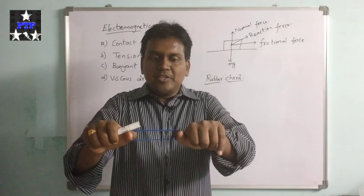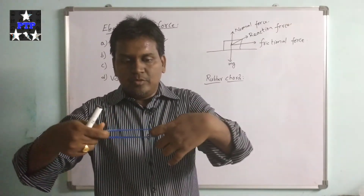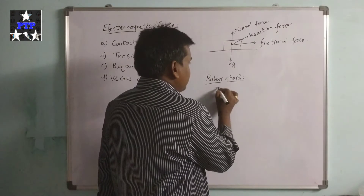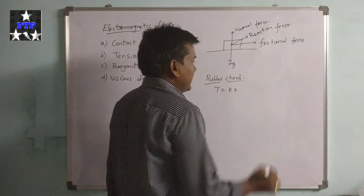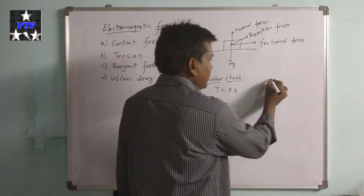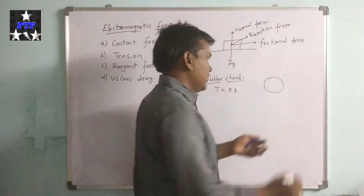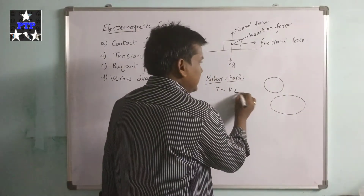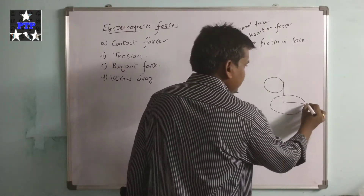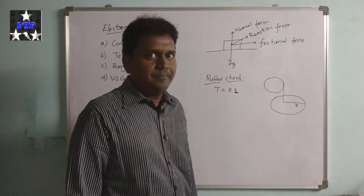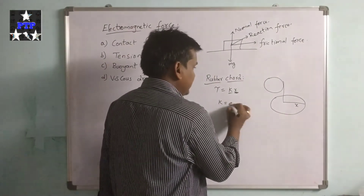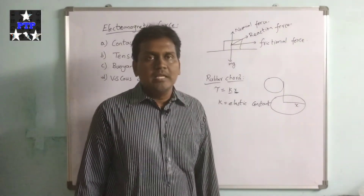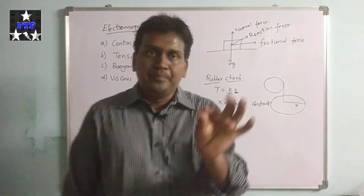For a rubber cord, when it is stretched it tends to tension and it can pull a body — if you are pulling from one side, a body on the opposite side can be pulled by it. So for a rubber cord, tension T equals KX, where X is the extension in the rubber cord from its slack state. K is called the elastic constant and X is the extension.